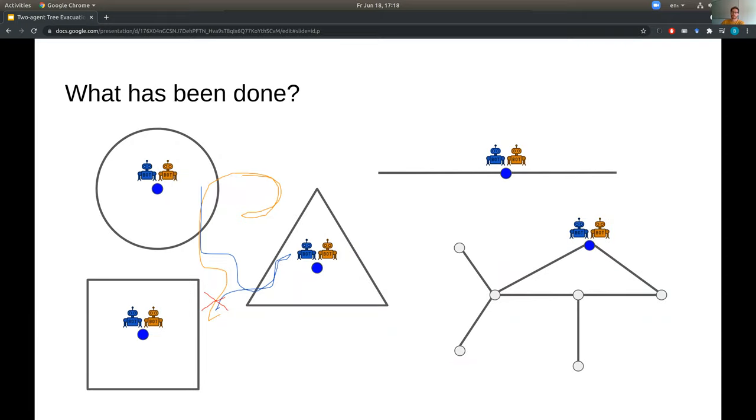So what has already been done? Well, some guys, quite a while ago, they looked at finding an exit along the line. And then some other guys later looked at escaping a disk, where the agents start in the middle of the circle, and the exit is located somewhere along the perimeter. And then some other guys came along. They looked at escaping a triangle in a square, and some others still looked at some things called m-rays. But we like graphs, so we thought it would be much more interesting to look at evacuation of graphs. So that's what this paper is about.